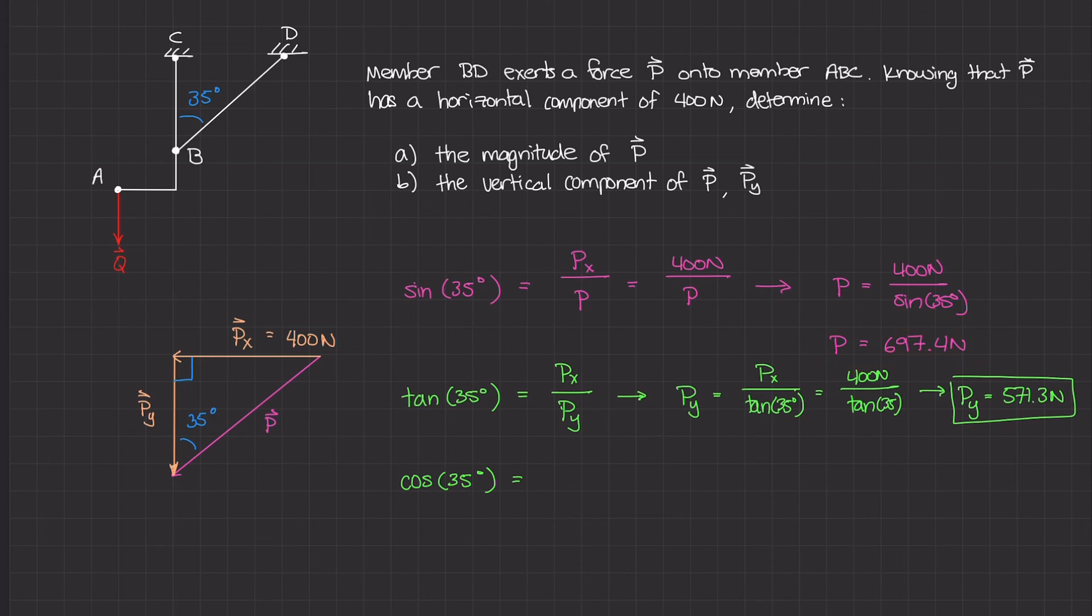Cosine of 35 degrees equals Py over P. If I rewrite this in terms of Py, this equals P times cosine of 35 degrees. Substituting the P value gives 697.4 newtons times cosine of 35 degrees.